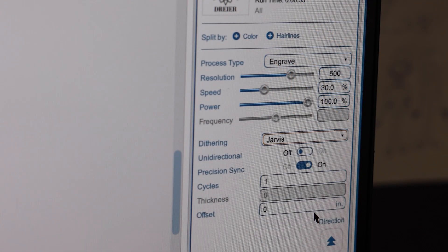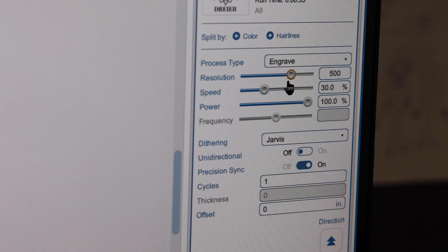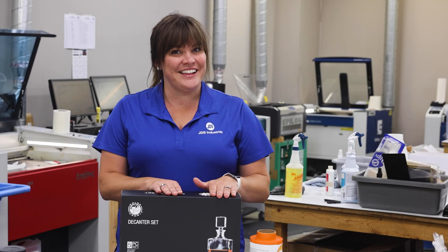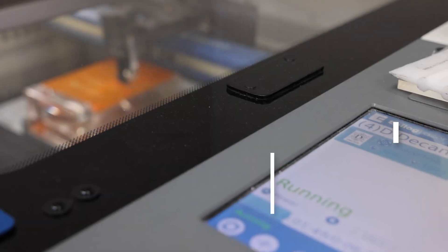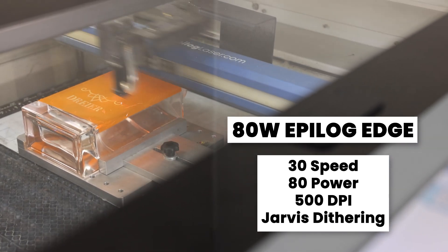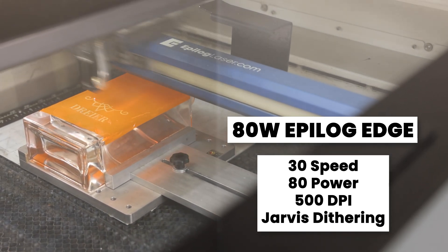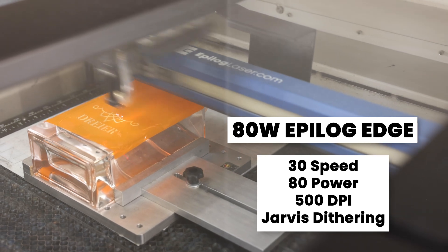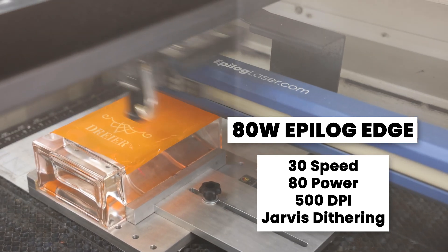Jarvis is known to mark glassware nicely, and a lower DPI is going to help soften the blow and reduce that heat exposure to the glass. Remember, heat and glass are not the best of friends. Through a ton of testing here in our shop, we have found on our 80 watt Epilog Edge, 30 speed, 80 power, 500 DPI, and Jarvis dithering to give us the best results on our drinkware.